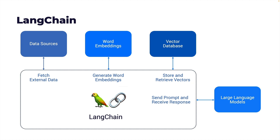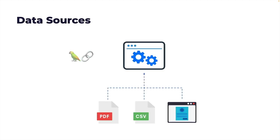LangChain connects the dots and constructs the right prompt to send to the LLM, and it can deal with a variety of LLMs. Data sources can come from anywhere — you can upload a PDF, use a CSV file, images, or structured data like SQL or NoSQL databases. LangChain has built-in libraries to deal with all of these data sources, and it can even browse the web to get appropriate data.